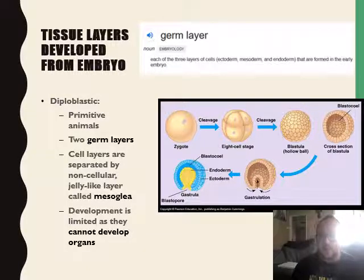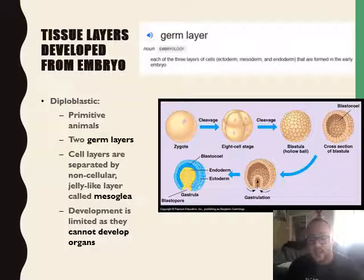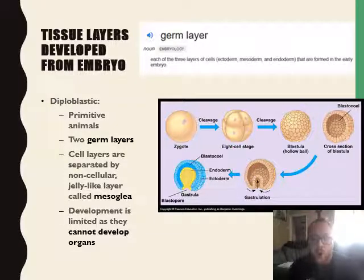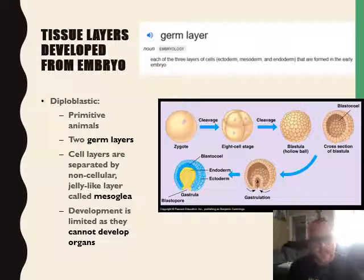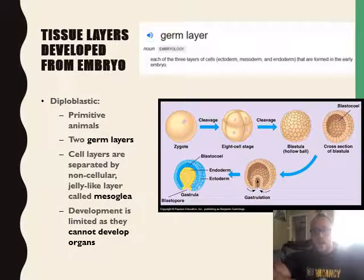These are very primitive or under-evolved animals. They only have two germ layers. At the top it says each of the three layers — ectoderm, mesoderm, and endoderm — are formed in the early embryo. A germ layer is just the layers created while this entire thing develops. We're only looking at diploblastic now. Cell layers are separated by a non-cellular jelly-like layer called the mesoglia. Meso meaning middle or in between — so this is a mesoglia, not a mesoderm.